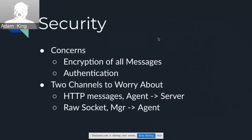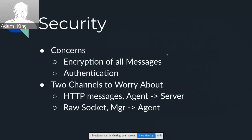Now I'm going to talk about some of the bigger issues with the agent, things we're worried about. The first and one of the more important ones is security. We're talking about having a secure channel here, because we're doing things over HTTP and also the raw socket. The things we're worried about are making sure the messages are encrypted and that we're authenticating who's sending them. If messages can't be sniffed and we know exactly who they're coming from and who we're sending things to, then we have a pretty secure channel of communication.